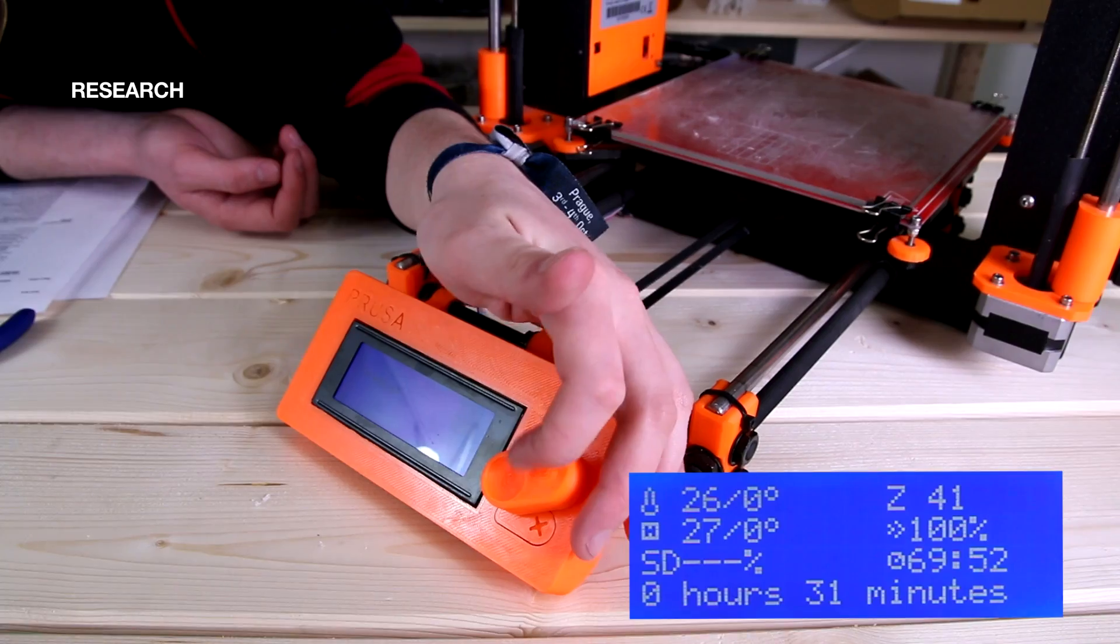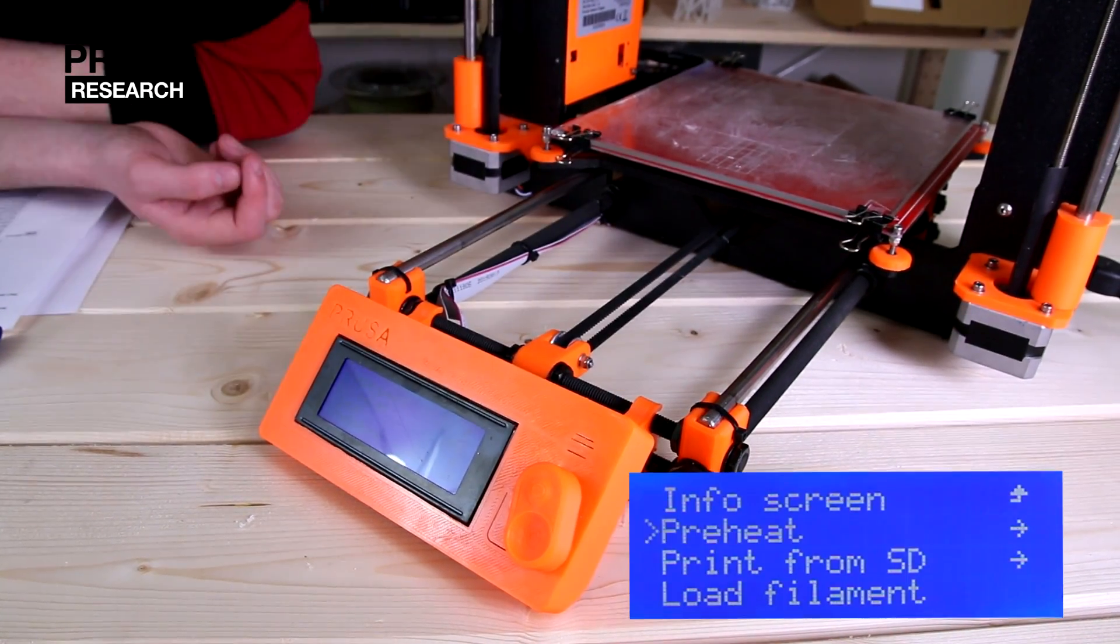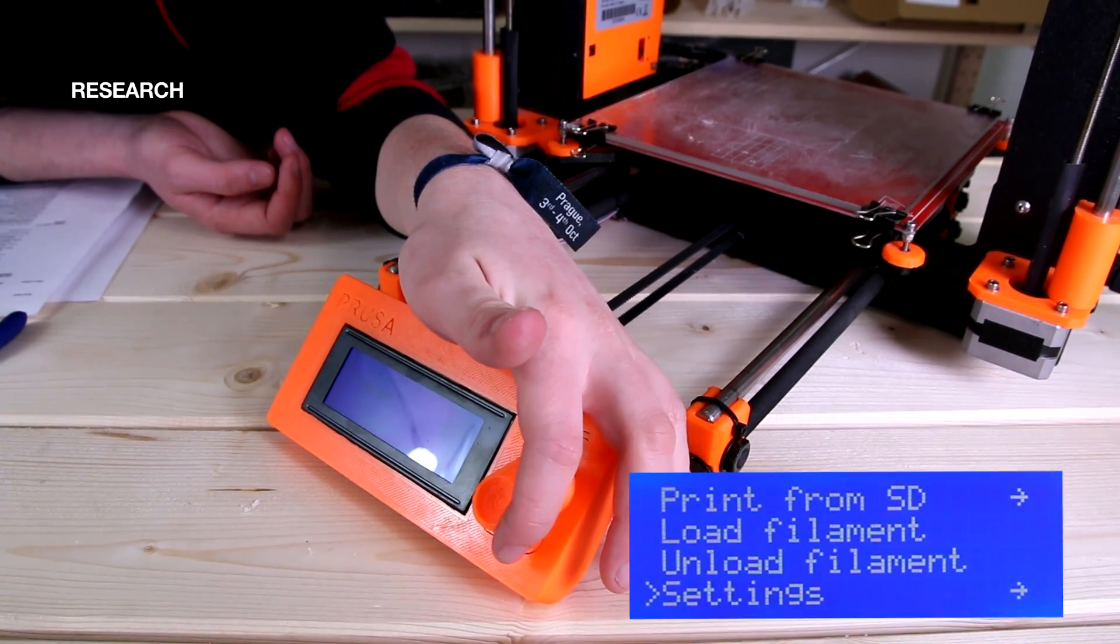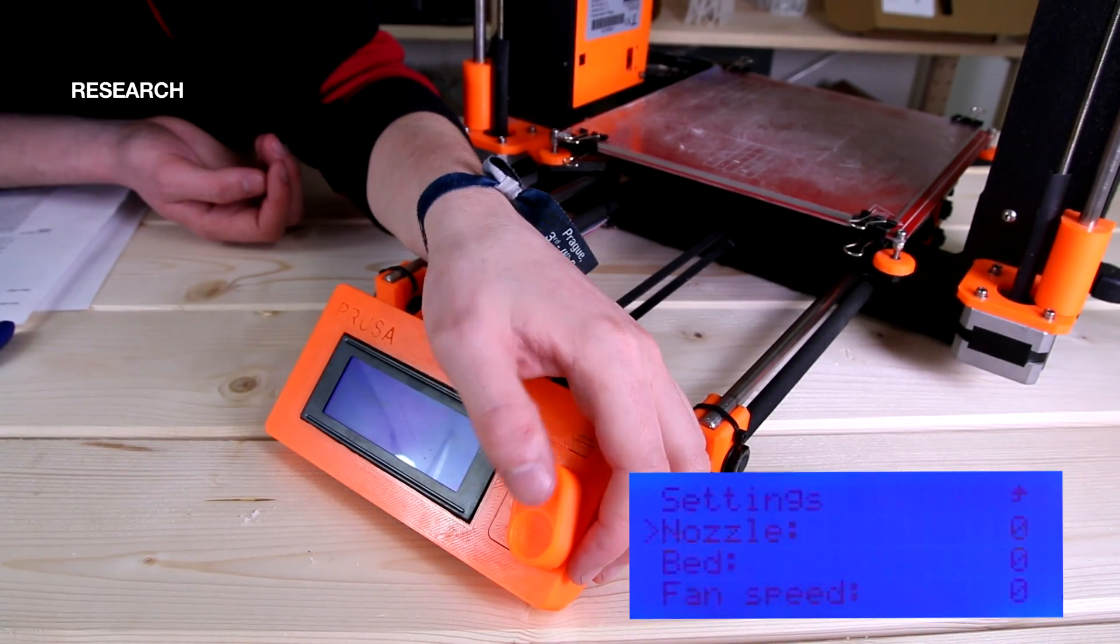You have to heat up the nozzle to get rid of the left filament in order to properly loosen the nozzle end. We will choose settings again, then temperature and set the temperature of the nozzle to 255 degrees Celsius.